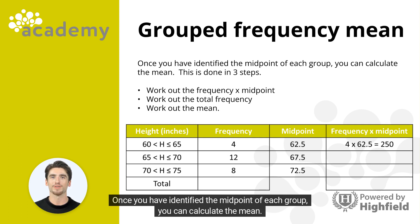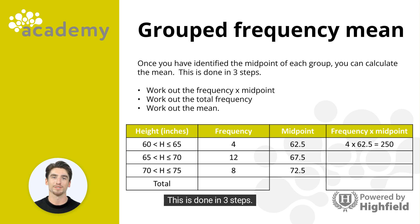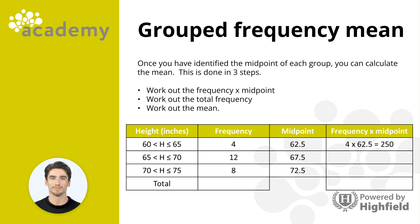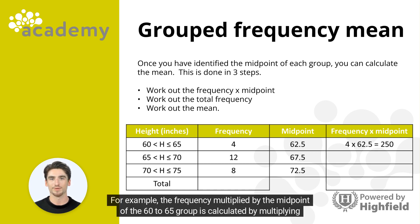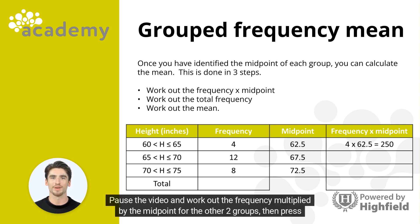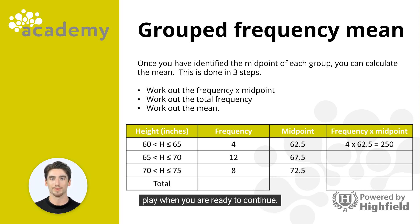Once you have identified the midpoint of each group, you can calculate the mean. This is done in three steps. Step 1: work out the frequency multiplied by the midpoint. This is calculated by multiplying the frequency and midpoint of a group. For example, the frequency multiplied by the midpoint of the 60 to 65 group is calculated by multiplying 4 and 62.5, giving an answer of 250. Pause the video and work out the frequency multiplied by the midpoint for the other two groups, then press play when you're ready to continue.